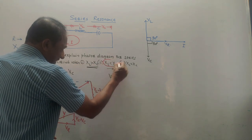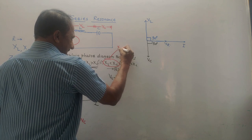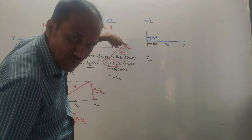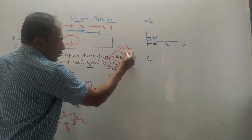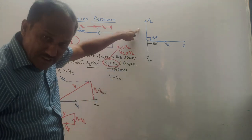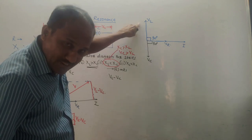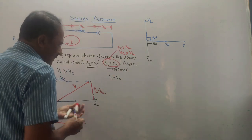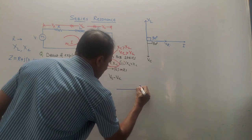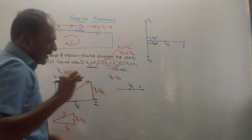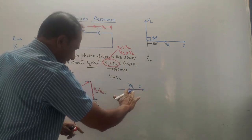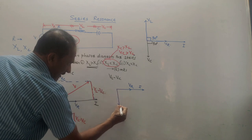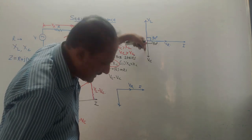Second condition: XL is less than XC, which means XC is greater than XL, and therefore VC is greater than VL. In the first case it was VL minus VC because VL was larger; in this case VC is larger than VL, so the resultant will be VC minus VL, drawn in the downward direction. Again, I take the current axis as the reference, and along it I mark VR — in all cases I and VR are along the same line.